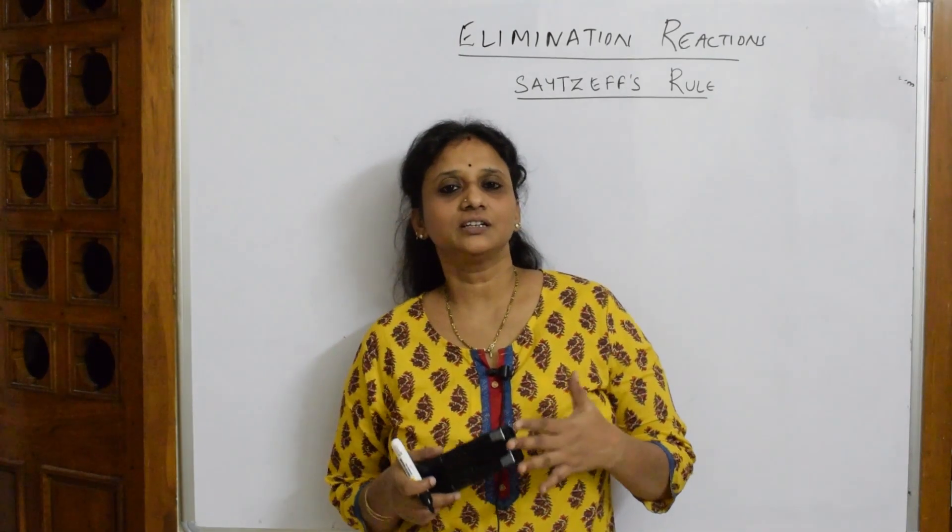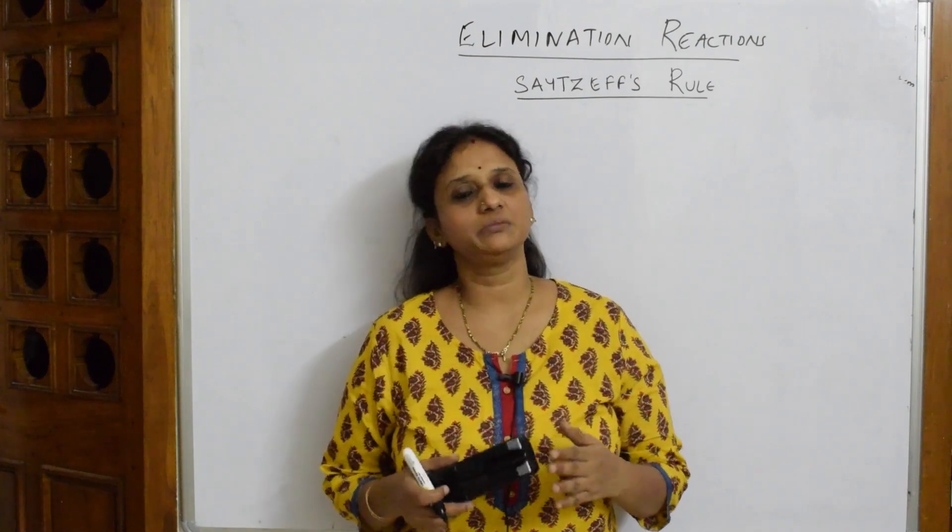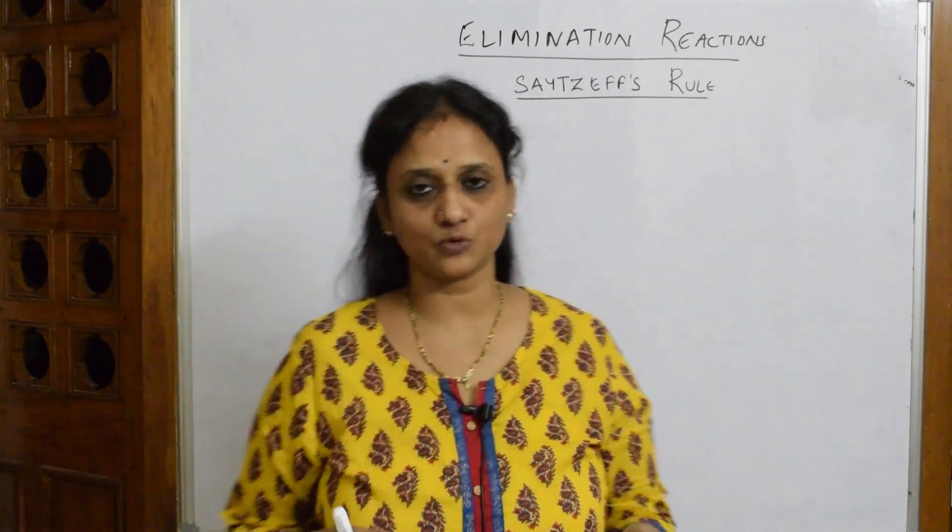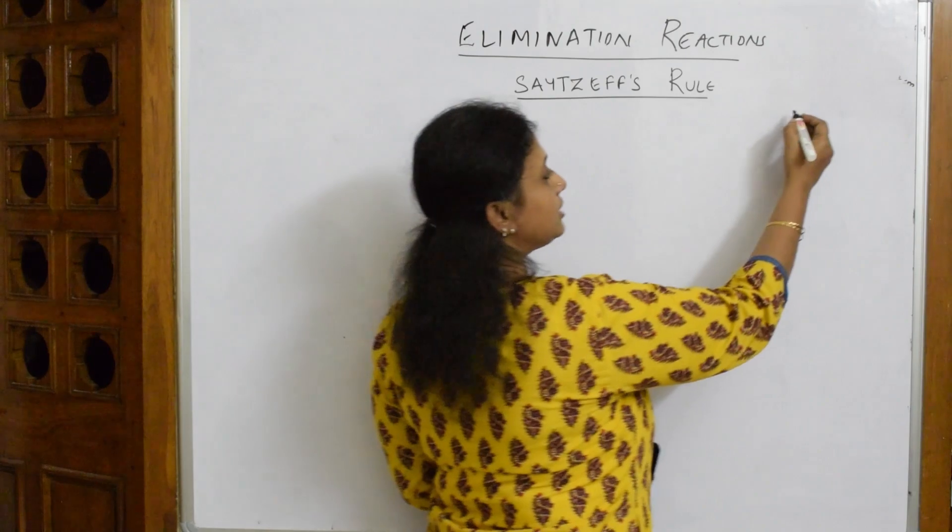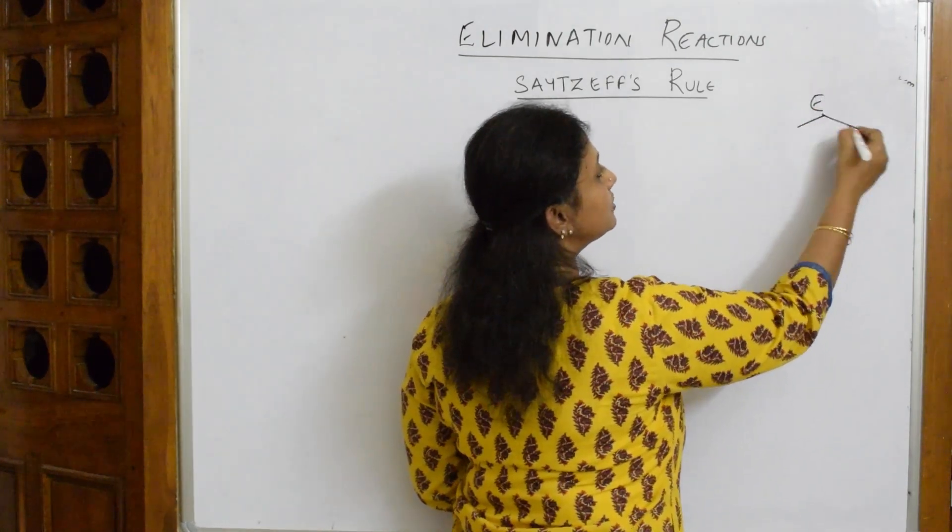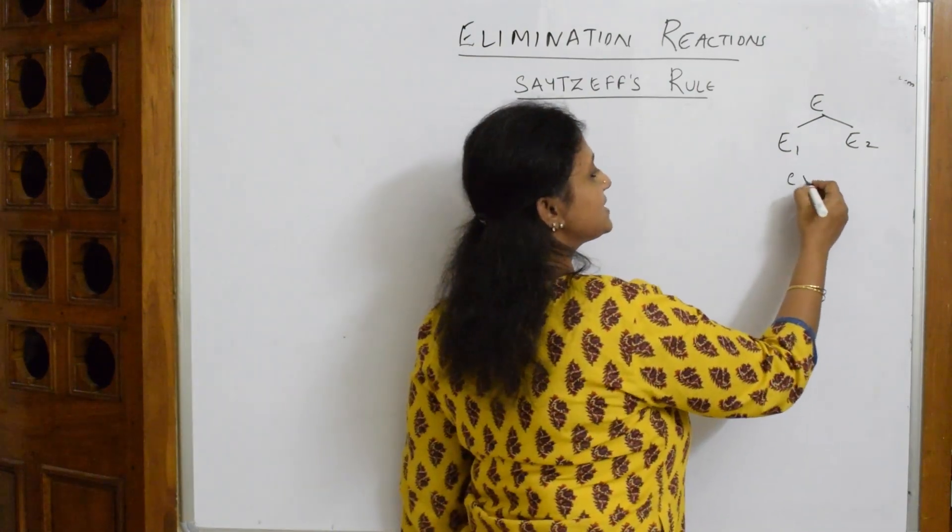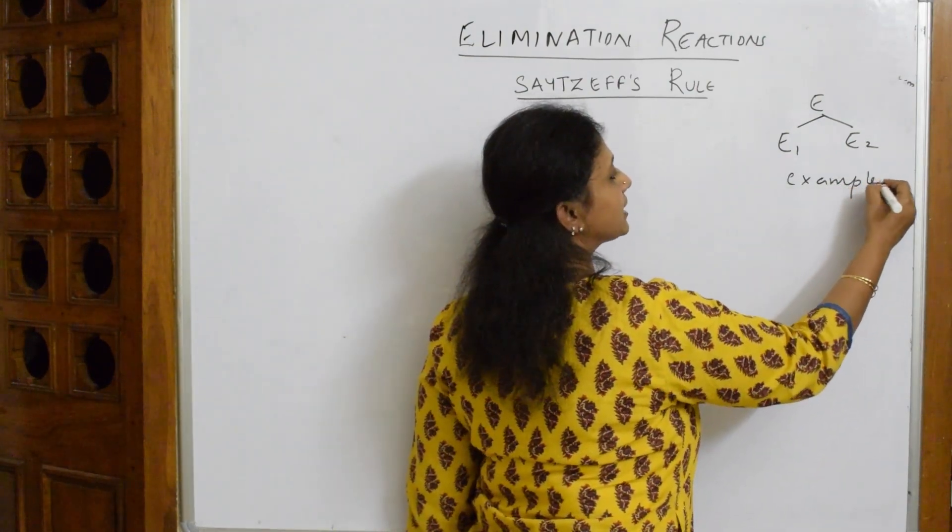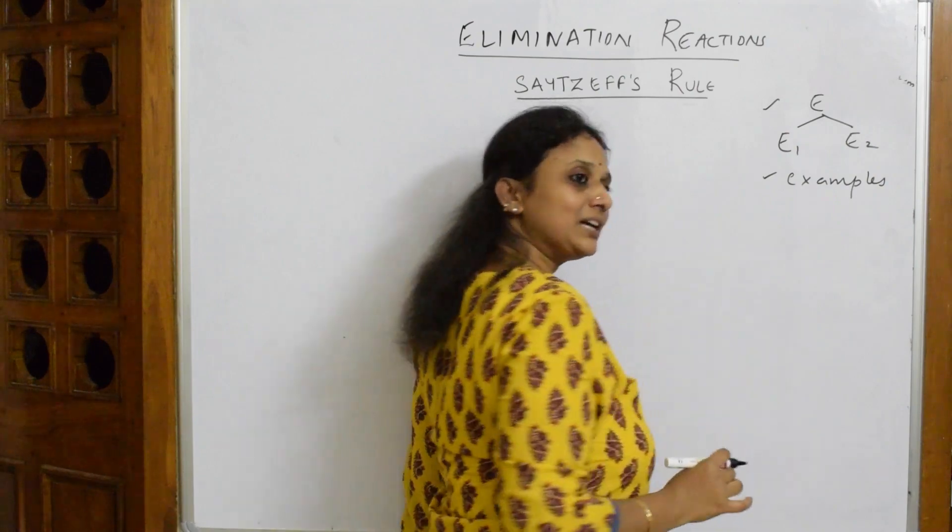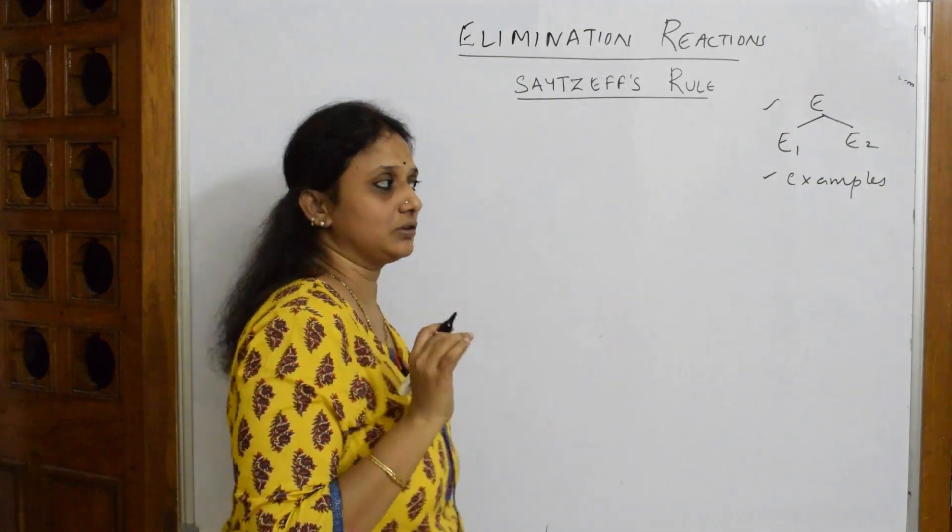Welcome back students. We started with elimination reactions - let me summarize what I've done in the previous video. In elimination reactions, I've explained the types of elimination: E1 elimination, E2 elimination, then I've gone to examples of elimination reactions. Now let us come back to the main or important rule.